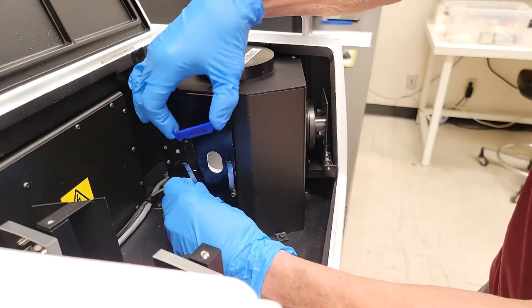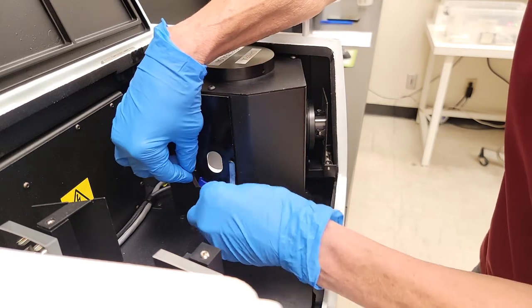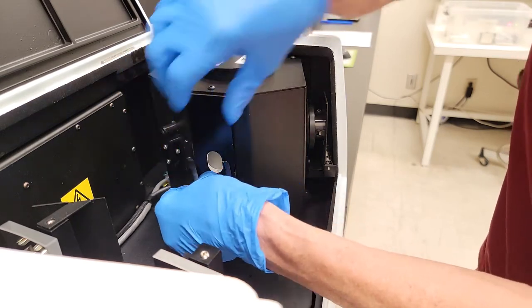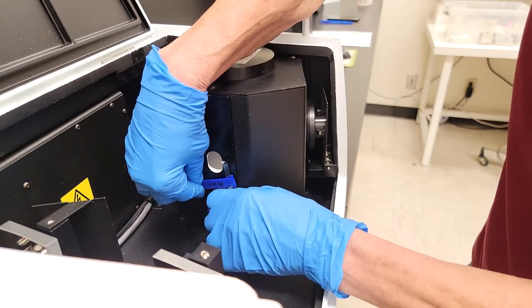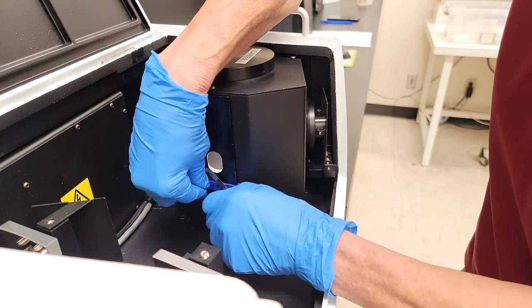Loosen the screws one at a time, just enough to place the groove of the shim over the screw and behind the sample clip. Just finger tight so it will not move.